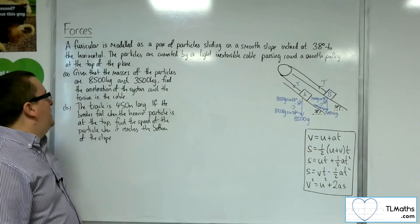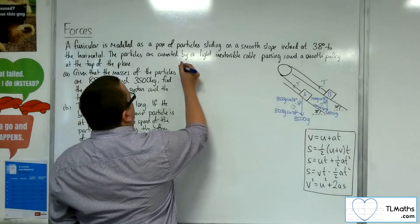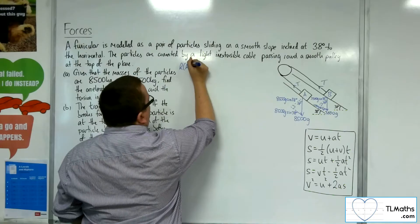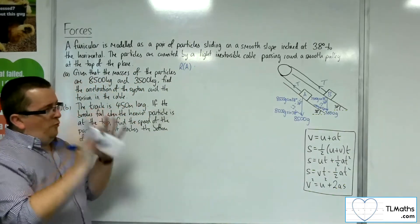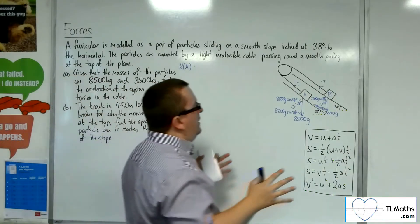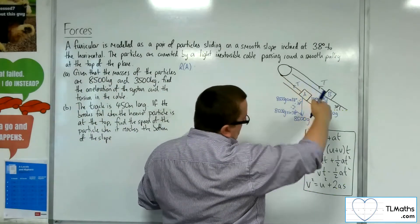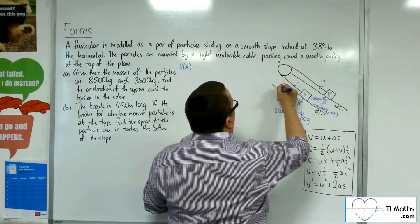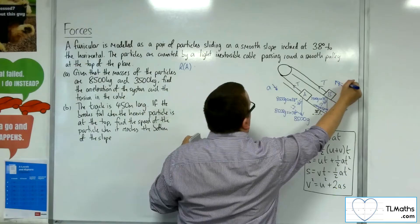We need to find the acceleration of the system and the tension in the cable. We'll resolve parallel to the plane for both particles. We need to think about the direction of acceleration: A being the heavier particle will move down the plane, pulling B up the plane. So A accelerates down the plane and B accelerates up the plane.